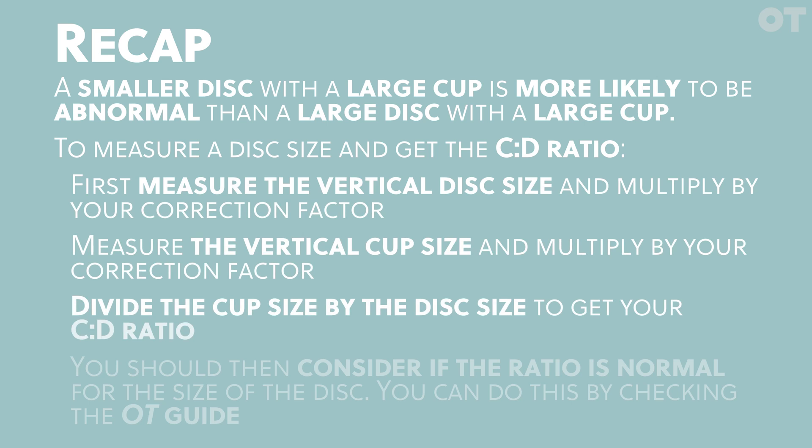Let's recap. A smaller disc with a large cup is more likely to be abnormal than a large disc with a large cup. To measure a disc size and get the CD ratio, first measure the vertical disc size and multiply by your correction factor. Measure the vertical cup size and multiply by your correction factor. Divide the cup size by the disc size to get your CD ratio. You should then consider if the ratio is normal for the size of the disc. You can do this by checking the OT guide.